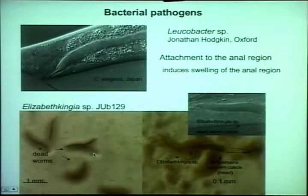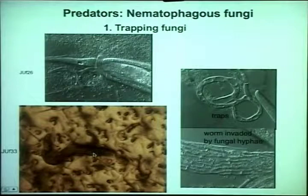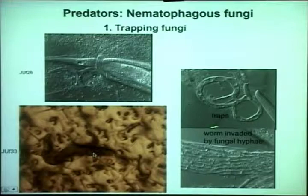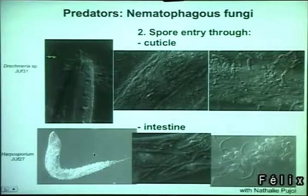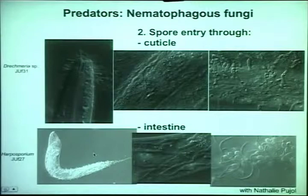So this is a horror show for just two minutes. You have the trapping fungi that you've probably heard about, where worms can enter and the traps actually contract, then send hyphae inside the worms and eat them up totally. You have other fungi which use spores for entering the worms — things like Drechmeria, studied in Jonathan Ewbank's lab, which adhere to the cuticle, or Arbosporium characterized by Nathalie Pujol, which enters through the intestine and colonizes the worm.